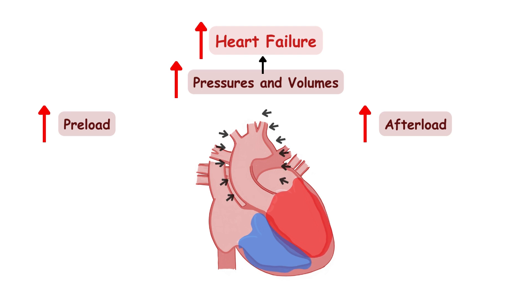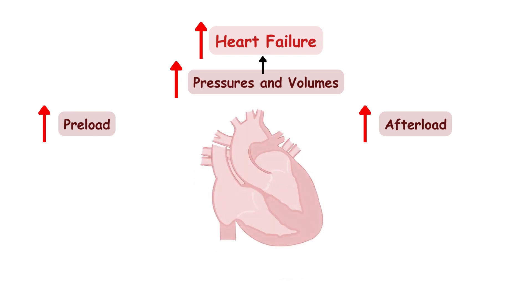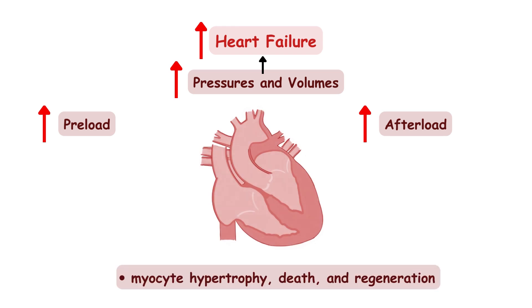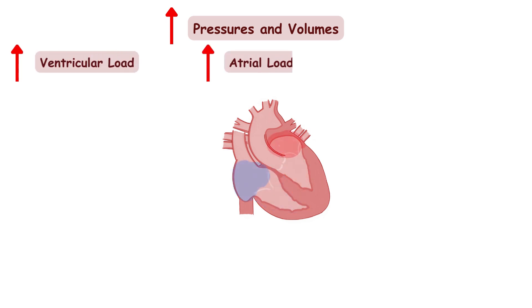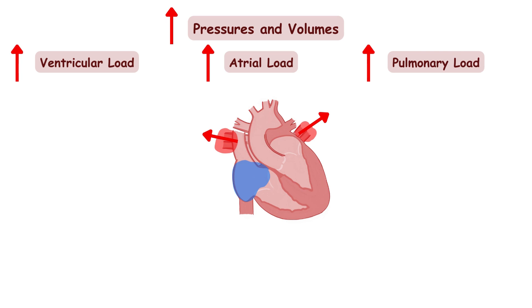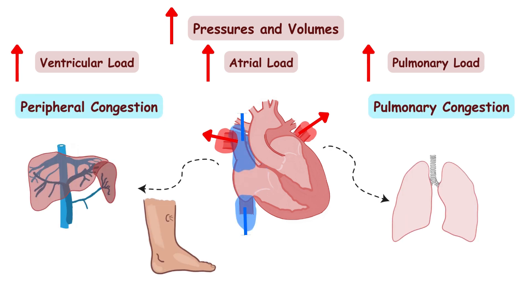The heart's response to this increased stress is myocyte hypertrophy, death, and regeneration. As more myocytes die and increased levels of stress are placed on the remaining myocardium, heart failure worsens. From the point of clinical manifestations, all of these adaptations lead to increased ventricular pressures and volume load, which leads to increased atrial load, then increased pulmonary load, and ultimately pulmonary and peripheral congestion — meaning the patient is literally drowning in fluid within the body.